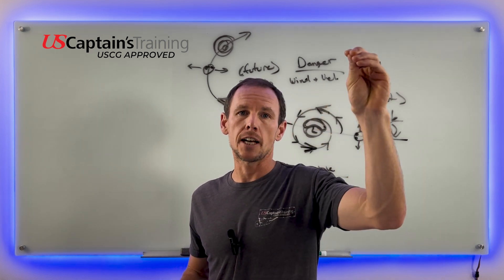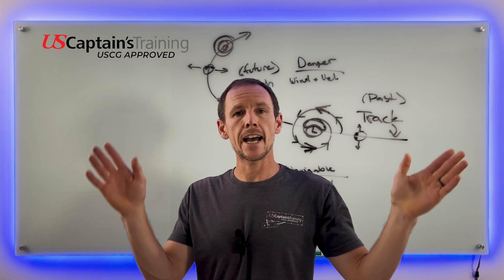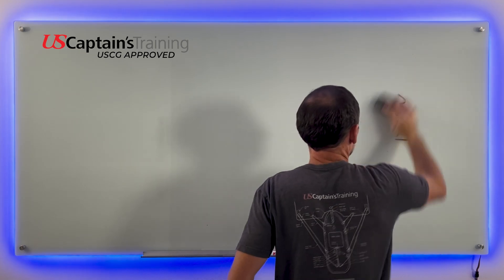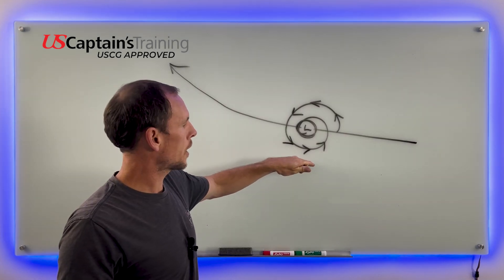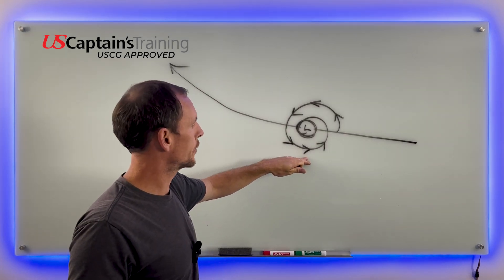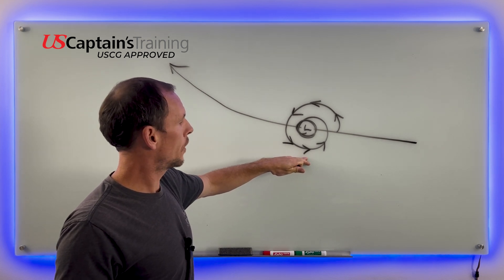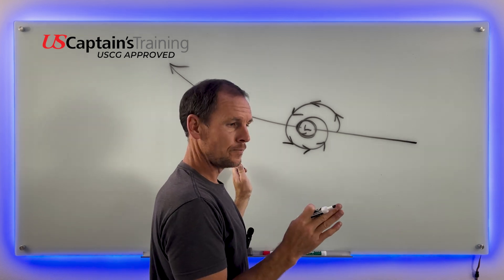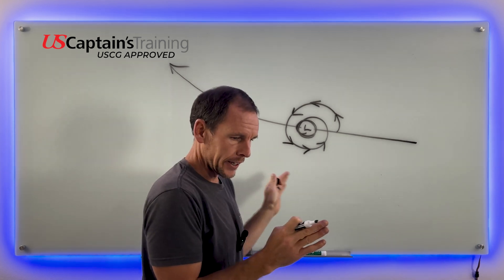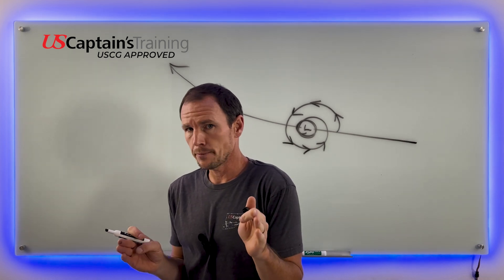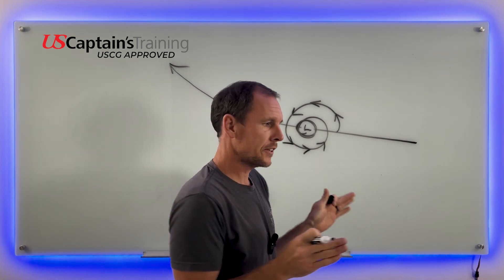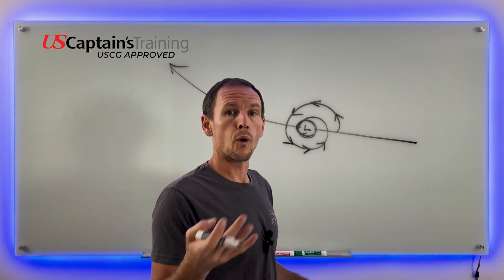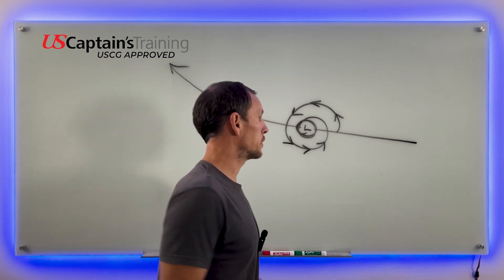Now that we're familiar with these terms, we can track the storm and figure out if we're on the dangerous side or navigable side, then take action accordingly. Here's a low pressure system — a rotating tropical storm, aka hurricane, in the northern hemisphere. We apply Buys Ballot's law: back to the wind, center of low to the left. We track whether the wind is shifting to the right, which is veering and means you're on the dangerous side, or shifting to the left, which is backing and means you're on the navigable side.